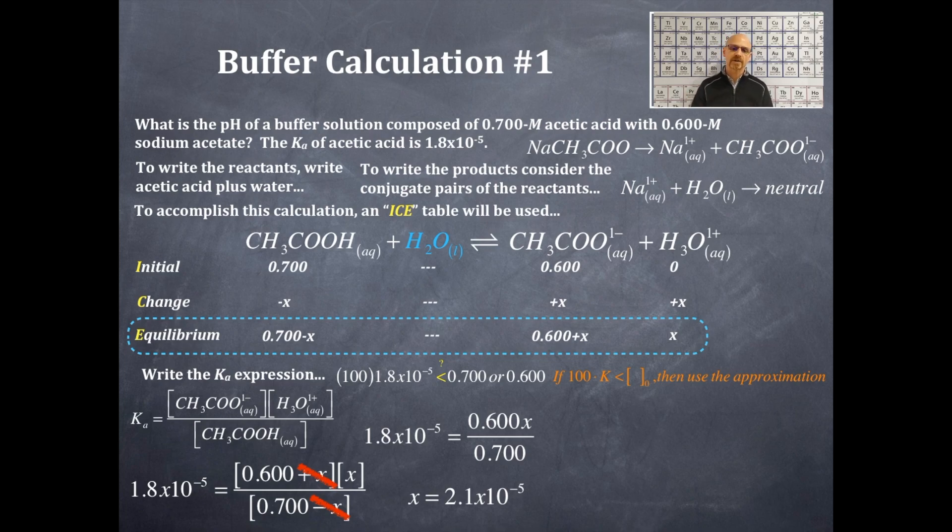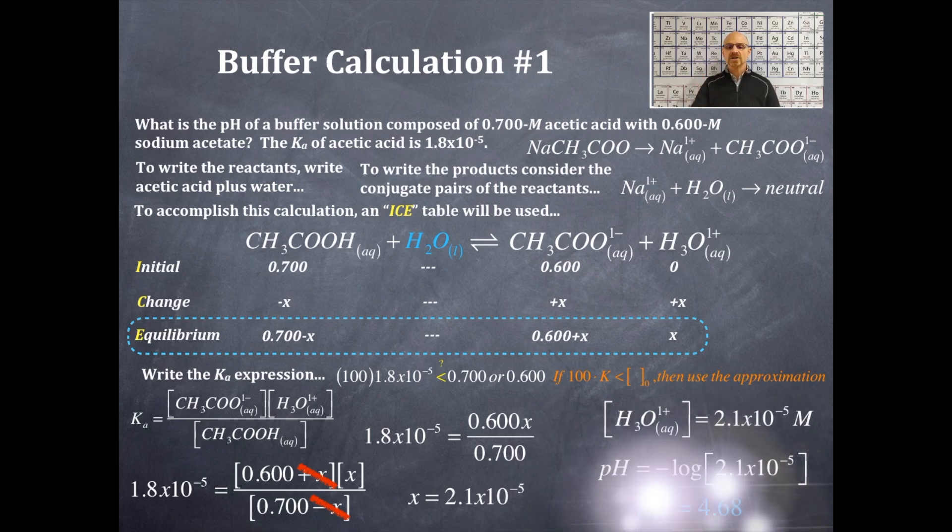But I'm actually not solving for those equilibrium concentrations, although you just did. I'm actually solving for the pH of this. So I got the hydronium ion concentration as 2.1 times 10 to the negative 5 because that is what x is equal to under the equilibrium set. So I'm going to take the negative log of this value and that will give me my pH. So the pH here for this is 4.68 for this buffer solution of acetic acid at 0.7 and acetate ion at 0.6.